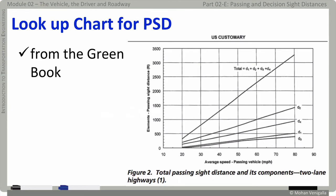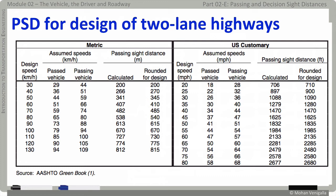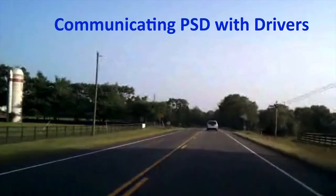Here is a simplified chart provided in the Green Book. For a given speed, you can find the PSD or its four subcomponents by looking up this chart. Here is another easy-to-read table on PSD, also from the Green Book. Reading from this table, for two-lane highways with a design speed of 45 mph, the calculated and designed PSD is 1,625 feet.